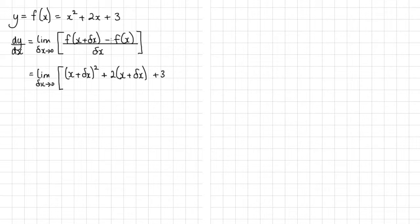And now we need to subtract the original function. So I need to put this in brackets. So it's going to be x squared plus 2x plus 3. And all of that is over delta x.